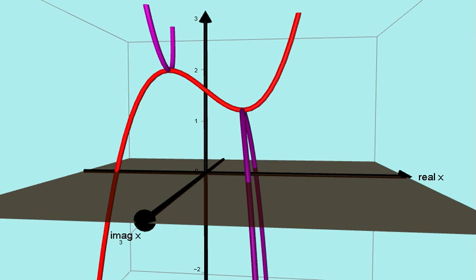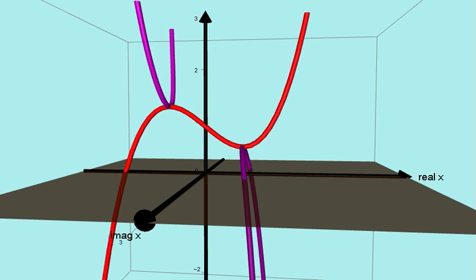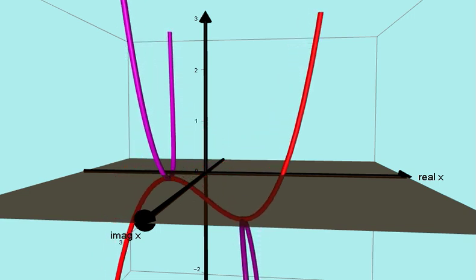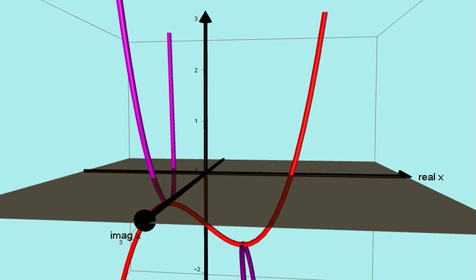Similarly, if I move the graph down to a position like this, then we have two other complex solutions to the equation y equals zero.